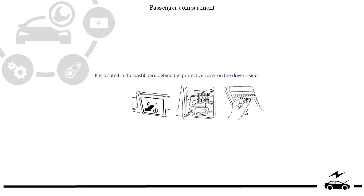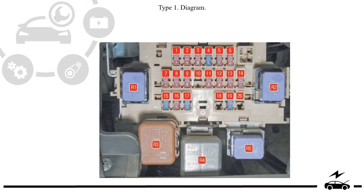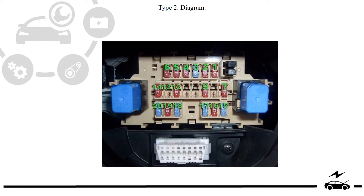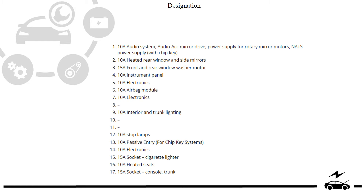Passenger compartment fuse box. Location. Type 1 — Diagram. Assignment. Type 2 — Diagram. Designation.